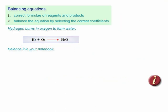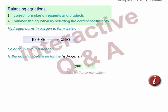Atoms are conserved in a chemical reaction, so both oxygens must end up as water molecules. So I need two water molecules to be formed. Now the oxygen is balanced.